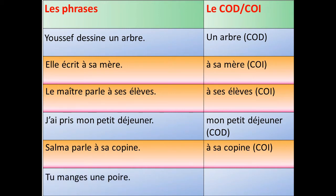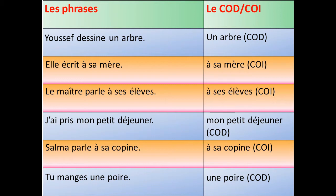Dans la dernière phrase : tu manges une poire. Tu manges quoi ? Tu manges une poire. Donc, « une poire », c'est le complément d'objet direct. Comme vous voyez dans le tableau, le complément d'objet direct est relié directement au verbe. Et dans le complément d'objet indirect, nous avons une préposition.